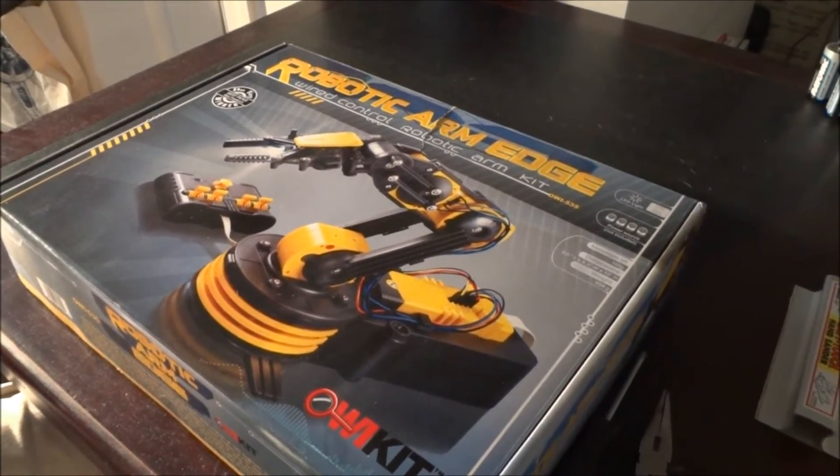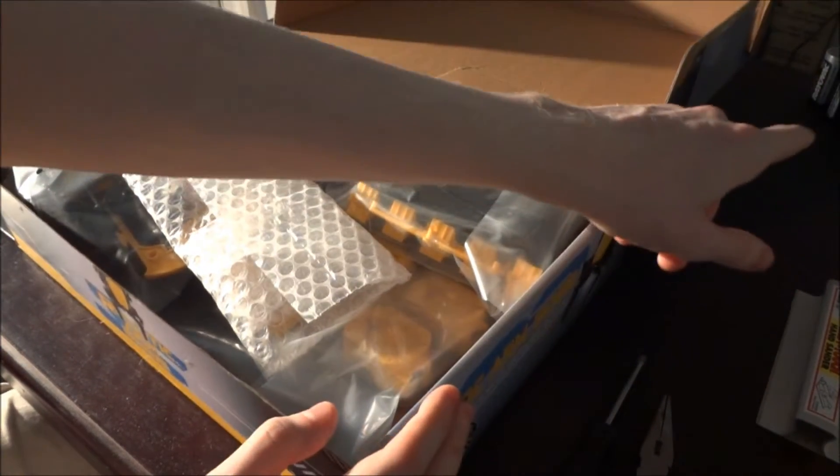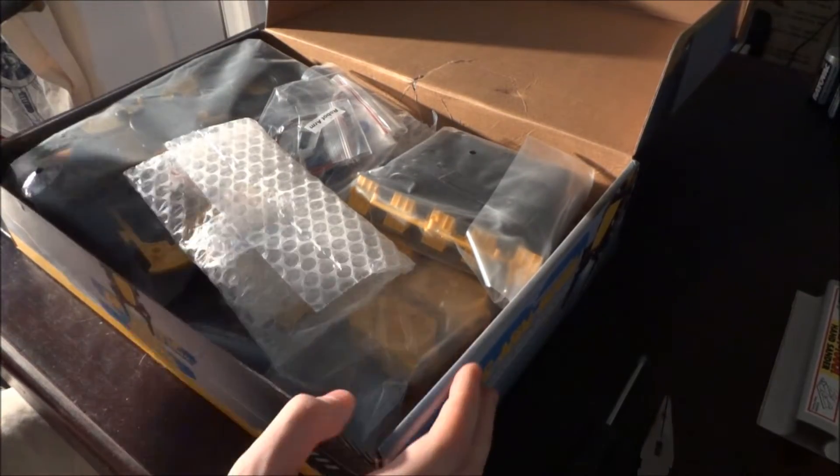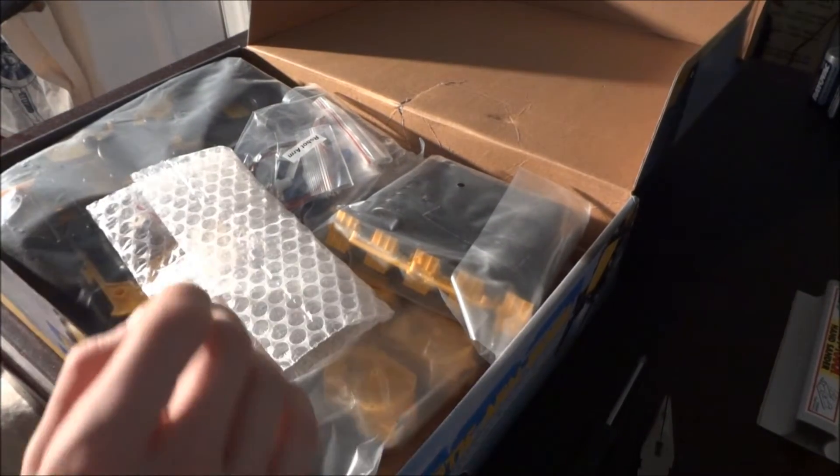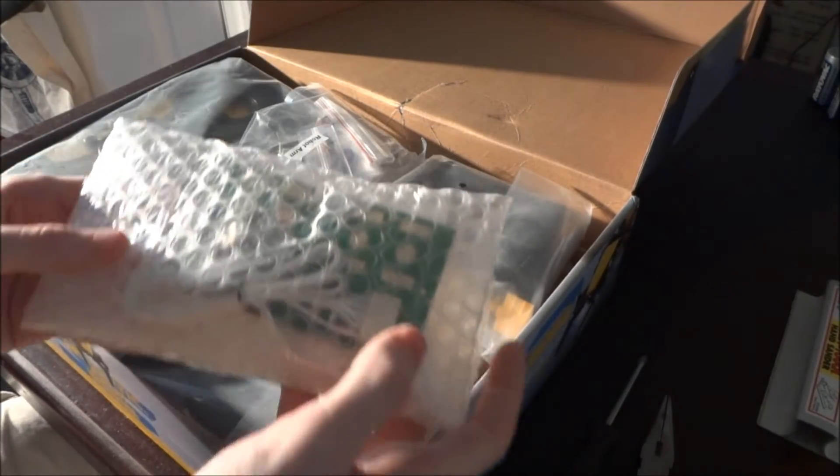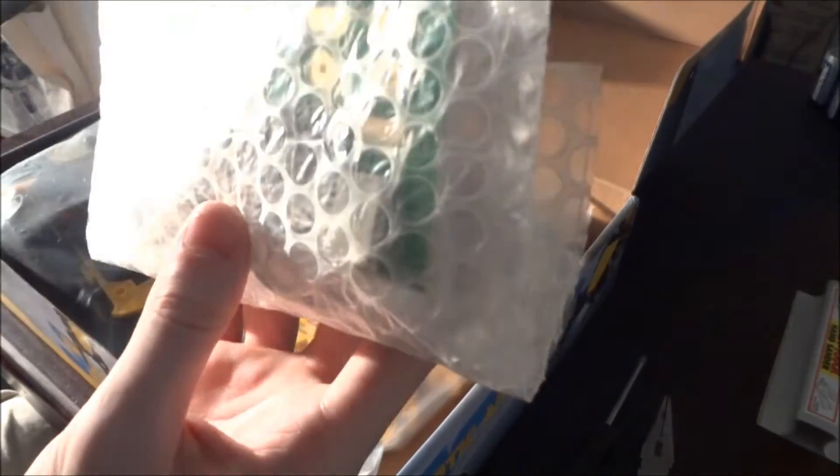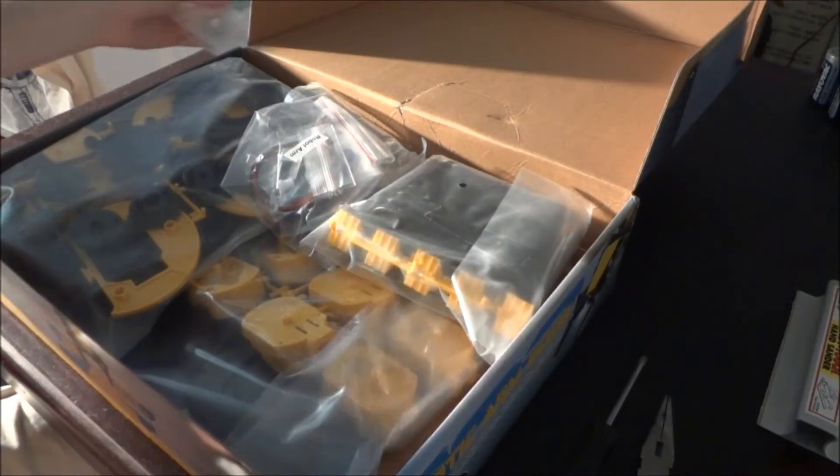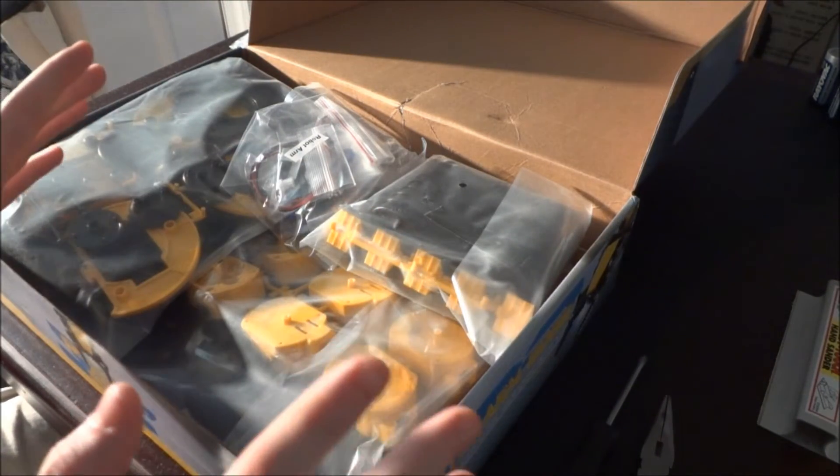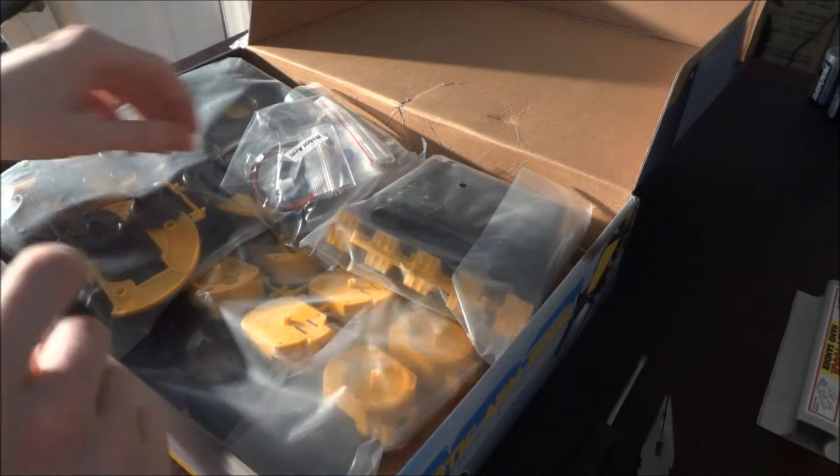I forgot to mention you also need four D-cell batteries. Let's get into the box and start looking at the contents. The first item is the wired controller for the arm, the circuit board and wires. There's no soldering needed; everything is pre-soldered and wired up already.